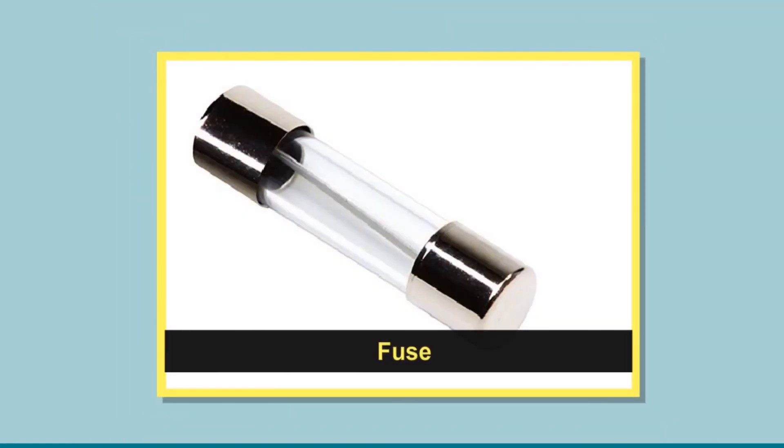A fuse is also used as a safety device in electrical circuits in our homes. It contains a thin copper wire connected to the circuit. If too much current passes through it, it melts and breaks, causing the circuit to become open. Thus, the current stops flowing, preventing an accident.